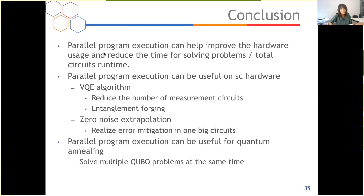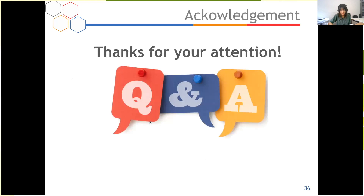To conclude, parallel program execution can help improve hardware usage and reduce the time for solving problems. It can be useful for superconducting quantum hardware — for example in VQE or zero-noise extrapolation — and for quantum annealing by solving multiple qubit problems at the same time. Thanks for your attention and I'm happy to answer questions.